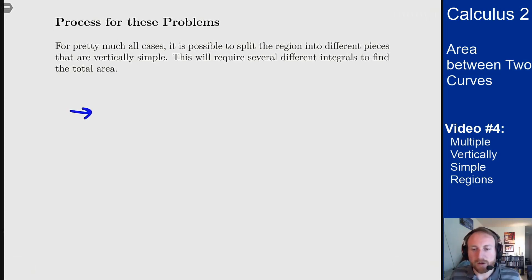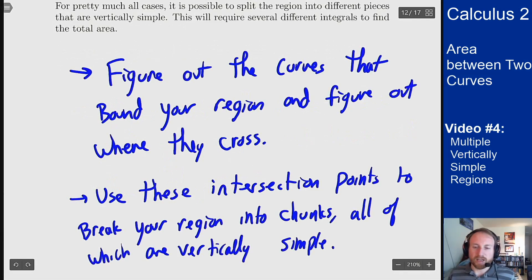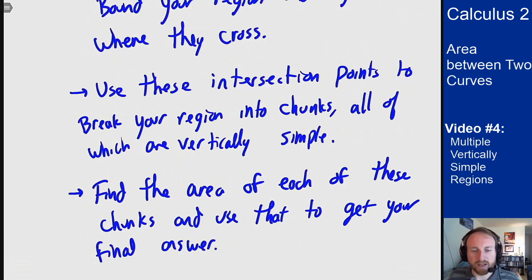So basically figure out the curves that bound your region and figure out where they cross. You then want to use these intersection points to break your region into different chunks, all of which are vertically simple. And then you want to go through and find the area of each of these chunks, and then add them up to get your total answer. That's really the idea behind all these problems.